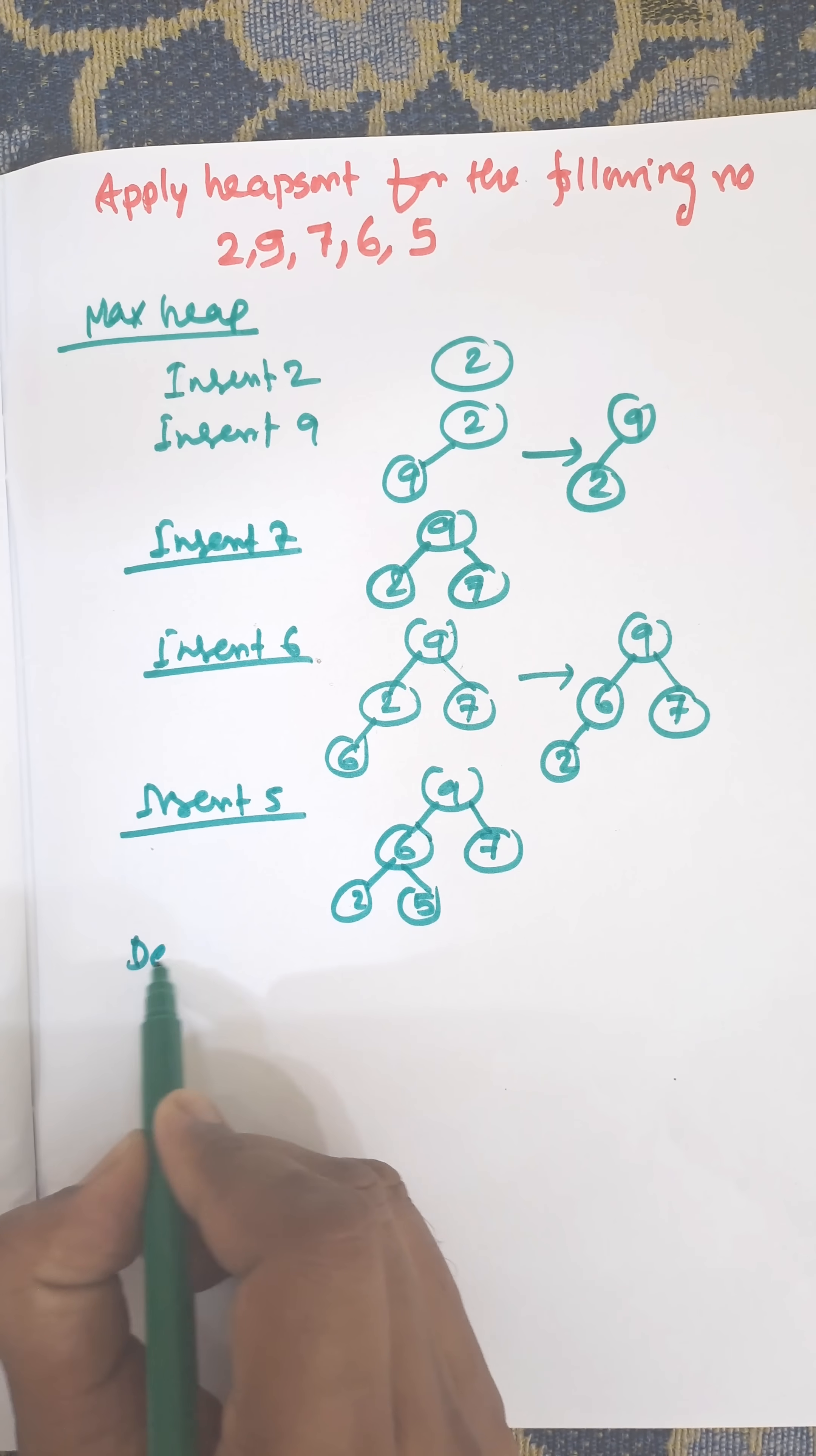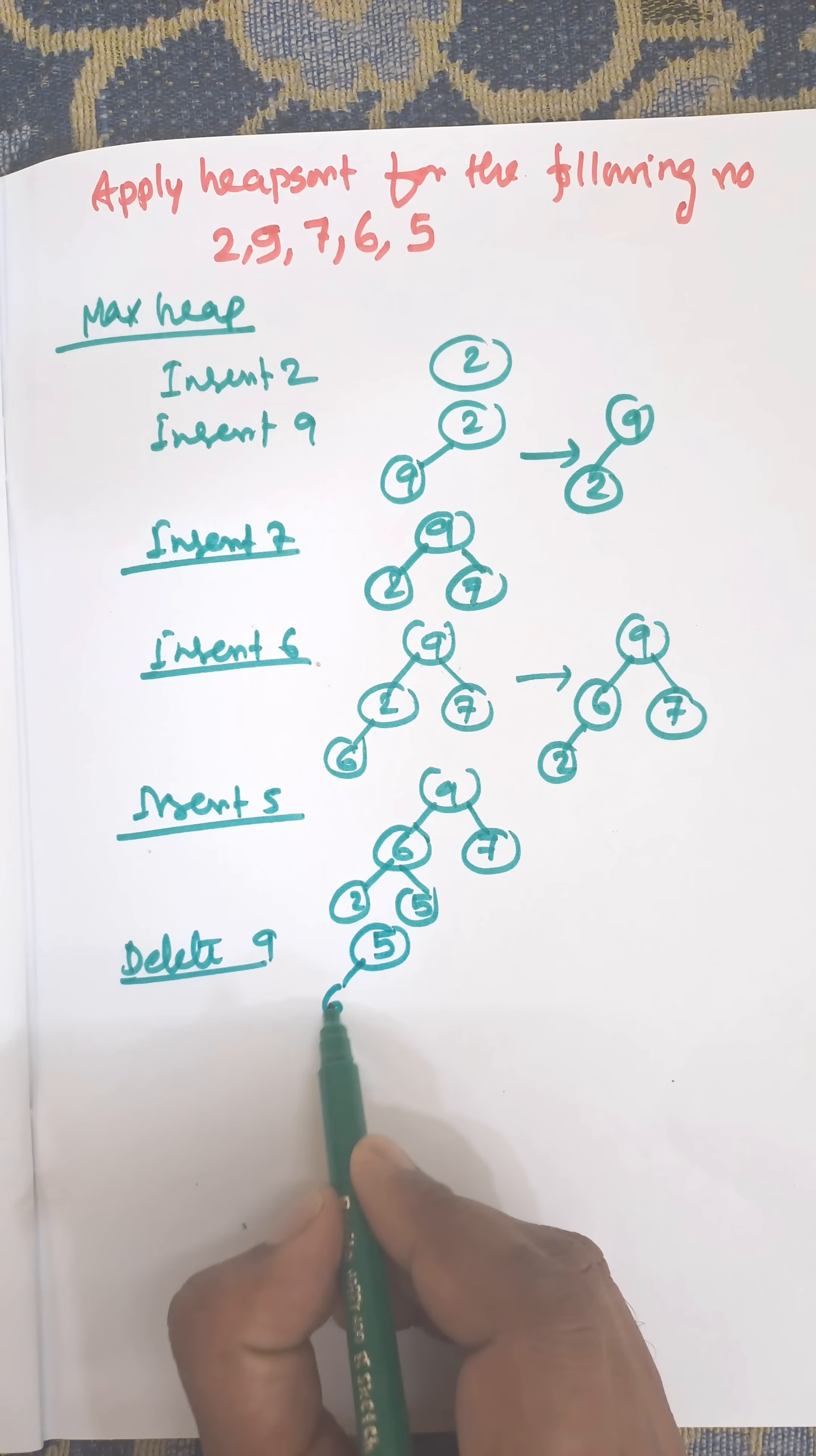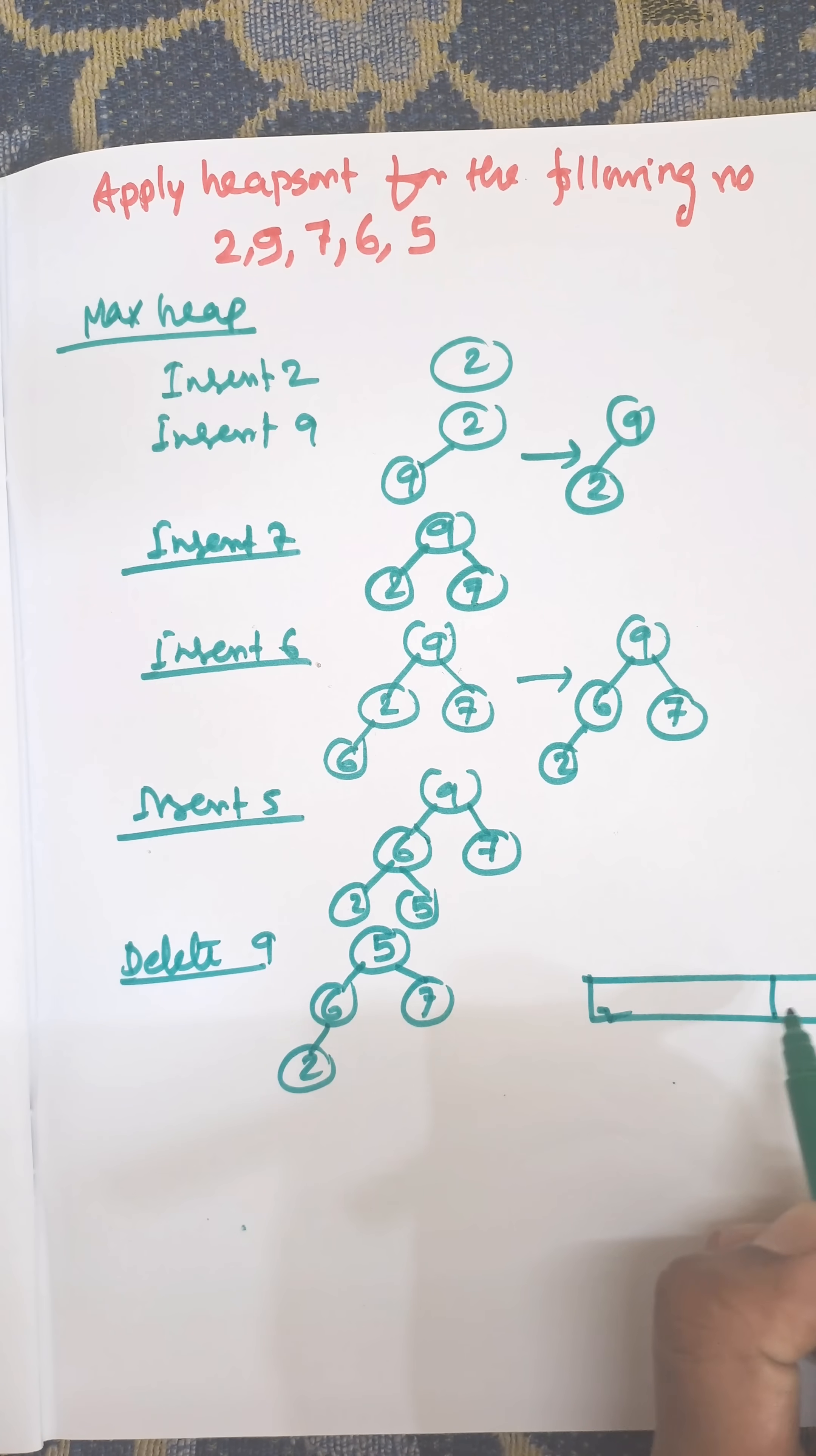Next, we need to delete the root node, that is 9. When you delete the root node, the last leaf node, that is 5, will be the temporary node. 5, 6, 7, 2. And the deleted node will be placed to the last element of the array.